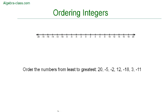On the number line, all the numbers to the right of zero are positive, and all the numbers to the left of zero are negative. The positive numbers are always larger than the negative numbers.